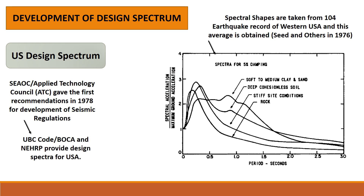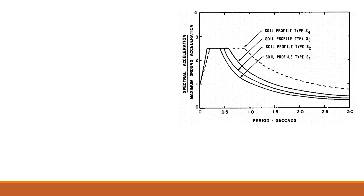You must understand how a response spectra was obtained for a single earthquake, such as El Centro, from the previous lecture. This spectra is for 5% damping, which is damping expected in concrete structures. There are a number of curves obtained for different soil types. The curve was further normalized over a time period, for a range of time periods and soil profiles.